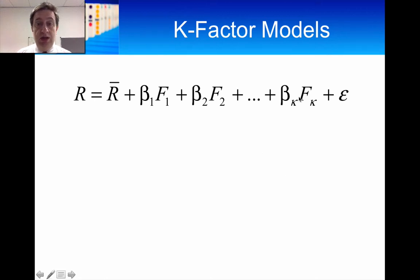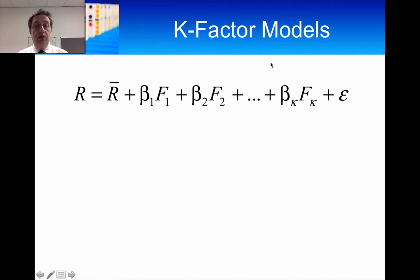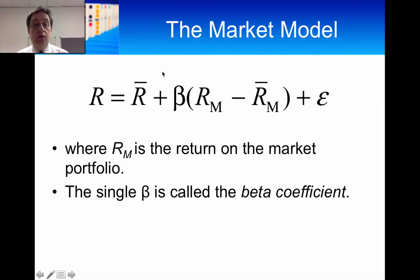This gives us a general expression: the return on any security is made up of the expected return, plus a function of all those market-wide factors that drive the unexpected parts of the return, plus the unsystematic part of that return. We're now going to start working at the portfolio level using this specification.